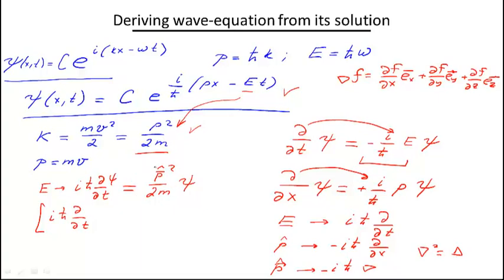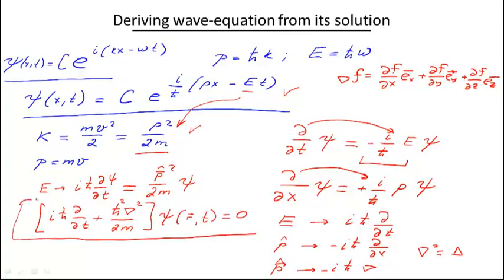Moving the p squared over 2m to the left-hand side, we can write it as plus ℏ² times the Laplacian divided by 2m, and this whole thing acts on the wave function, which in the three-dimensional case is a function of position r and time t. This equation is the free Schrödinger equation, which we have sort of derived — though we should use the word 'derived' in quotes, because there is no way to derive a fundamental law of physics, and the Schrödinger equation is an example of such a law. Our derivation is nothing but a guess.